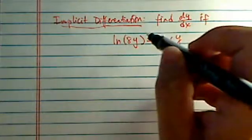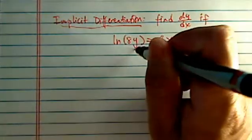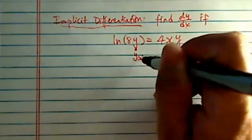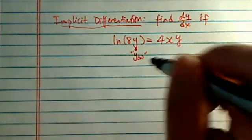Implicit differentiation, it's really just a fancy way to say use chain rule, because I'm going to treat y as a function of x.